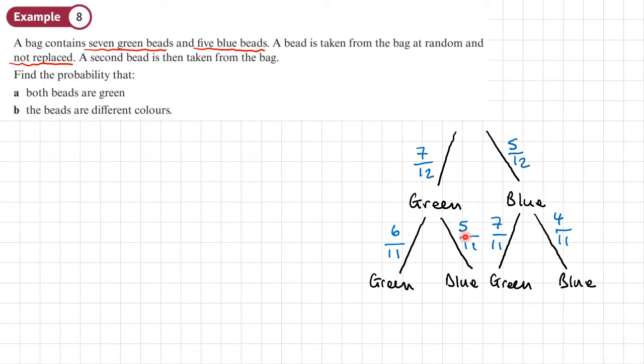Now before you move on, just double check that the numerators add up to the denominators. So six plus five is 11. That's fine. Seven plus four is 11. That's fine. So now we can use our tree diagram to answer this question.